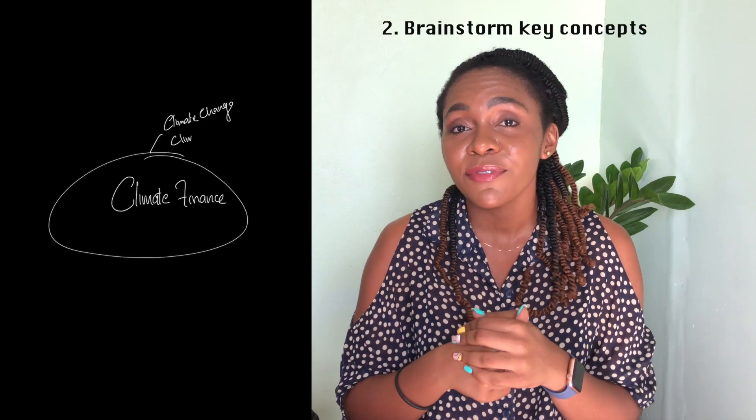The first and most straightforward of these six steps is identifying your research topic and area. That could be something you love, enjoy, or are interested in, or it could be a topic handed to you by your lecturer or supervisor. Once you identify that topic, the next step is to brainstorm.